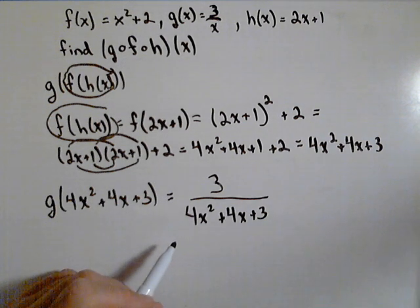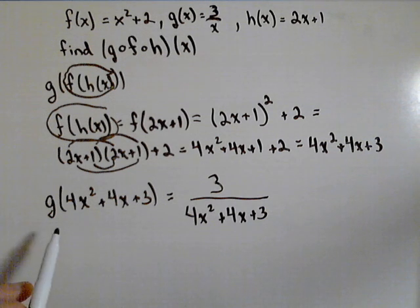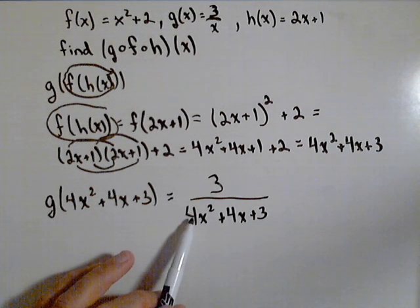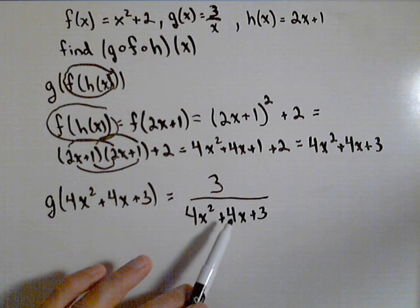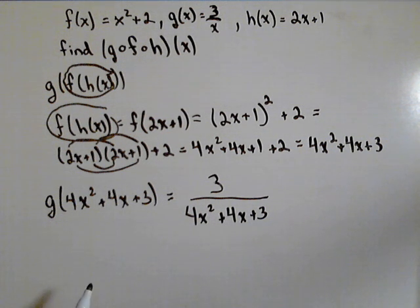So that's how we can handle the triple composition. If we had to compose another function on the outside, well, now I've got g of f of h of x. I could put that in as the input for the next function. So just work from the inside out.